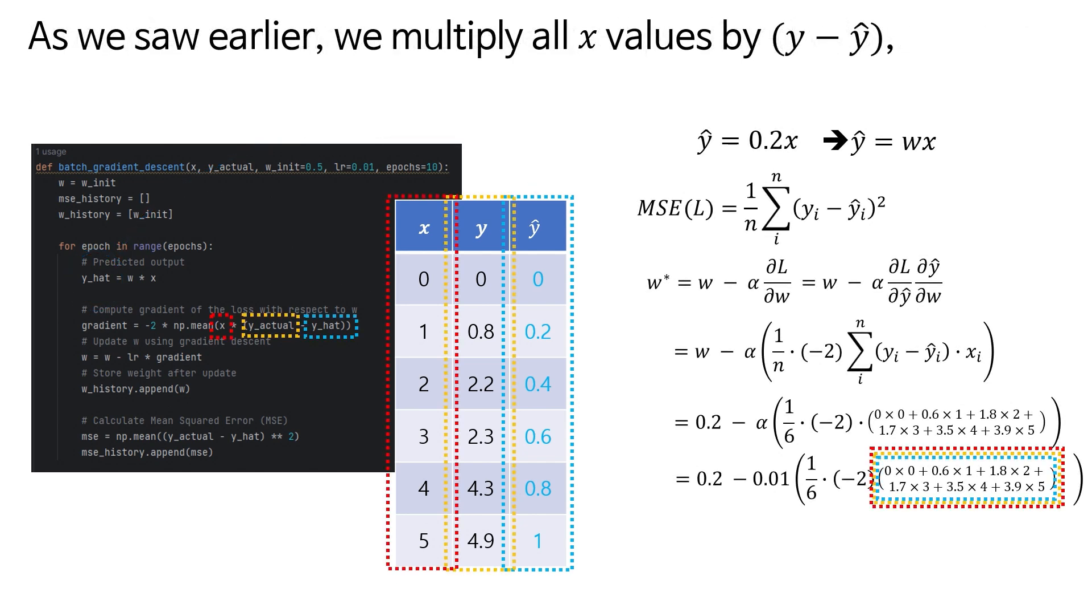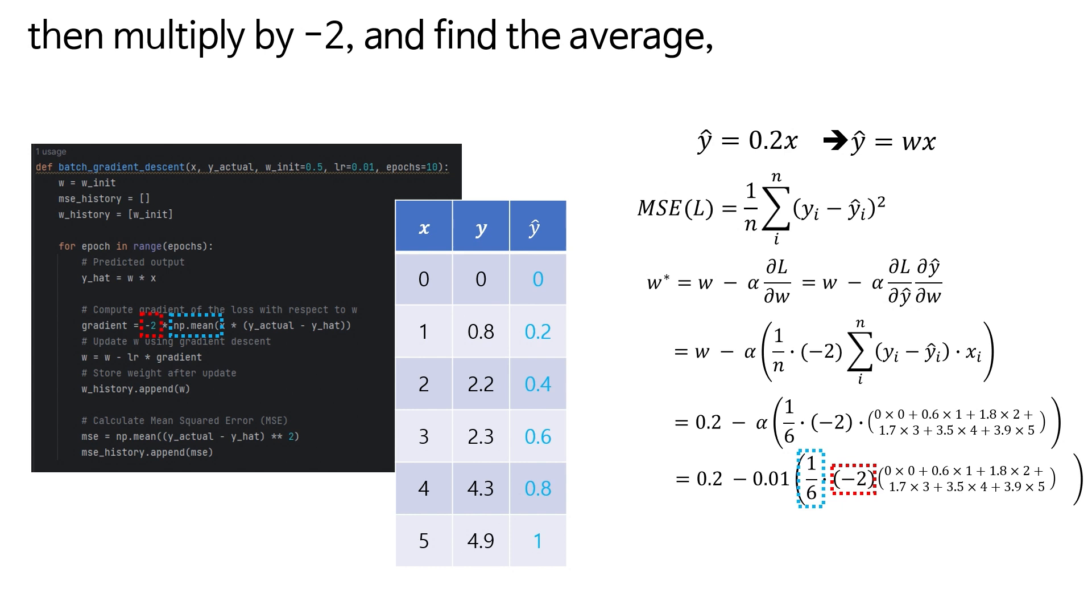As we saw earlier, we multiply all x values by y minus y-hat, then multiply by negative 2, find the average,